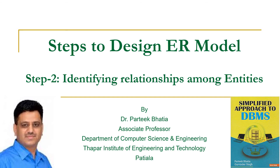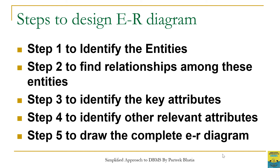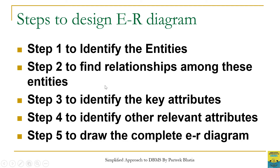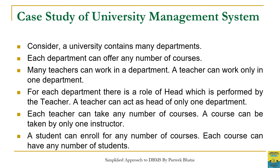In this session we are going to discuss steps to design an ER model, focusing on step two: identifying relationships among entity sets. In the previous session we discussed that there are five steps to design an ER model, and we completed the first step — identification of entities for a university management system. In this session we will find out the relationships among these entities under step two.